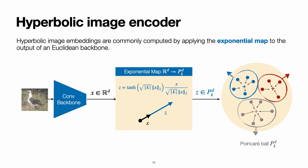So, the output of a convolutional backbone is interpreted as being Euclidean embeddings, lying at the tangent space at the origin of the manifold, and the exponential map projects these tangent vectors back to the manifold itself.